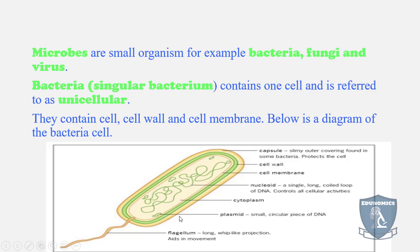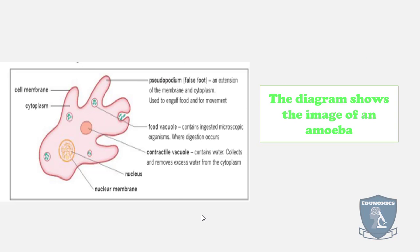Another unicellular organism is the amoeba. The amoeba is an organism that can actually move around. If you look at the structure, you have the cell cytoplasm, the vacuole, and food vacuoles because it creates something called a pseudopodium or false foot.